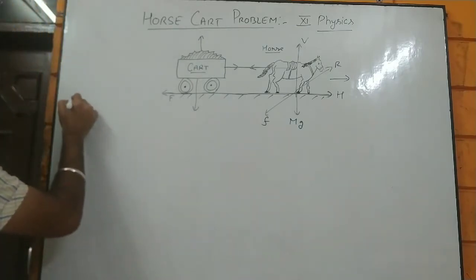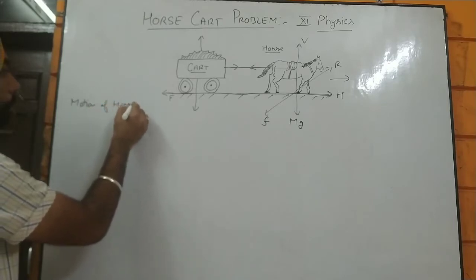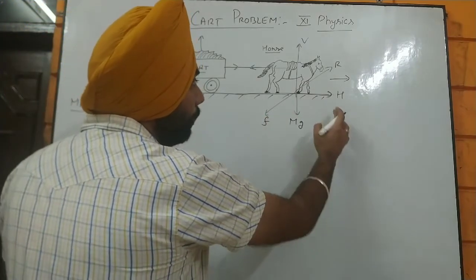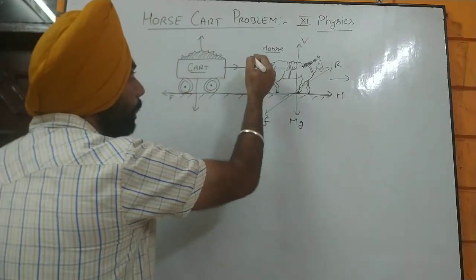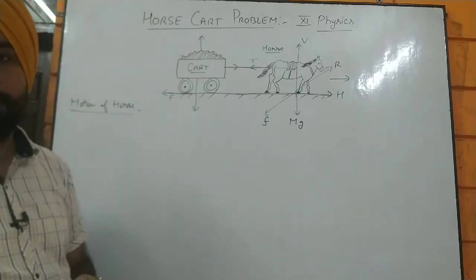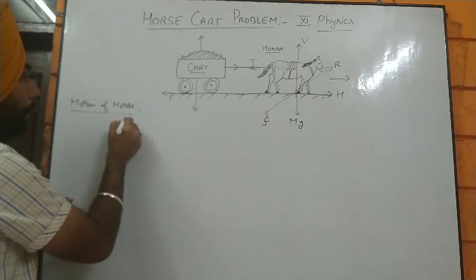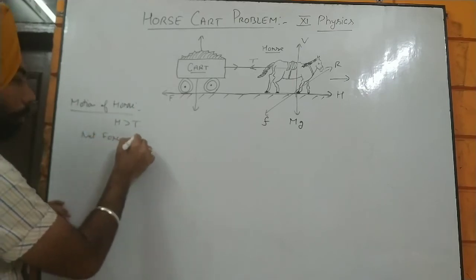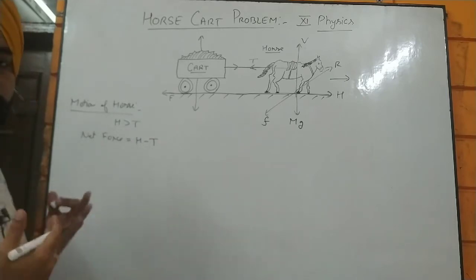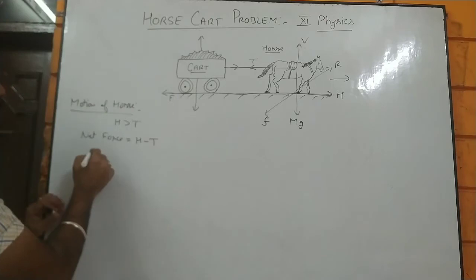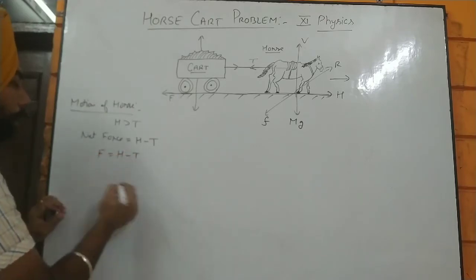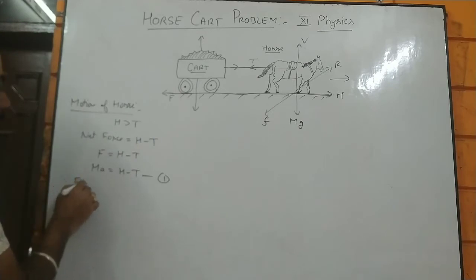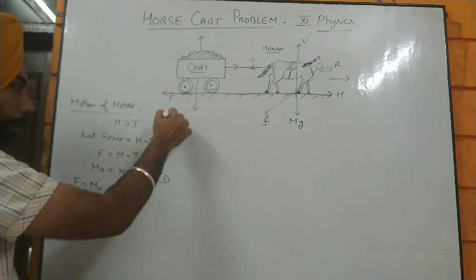Now let's consider the motion of the horse. If the horse is moving toward the right, the horizontal component H should be greater than the tension T in the string, which acts in the backward direction due to the weight of the cart. So the net force is H minus T, and by Newton's second law: Ma = H − T. That is equation number one — the equation of motion for the horse.